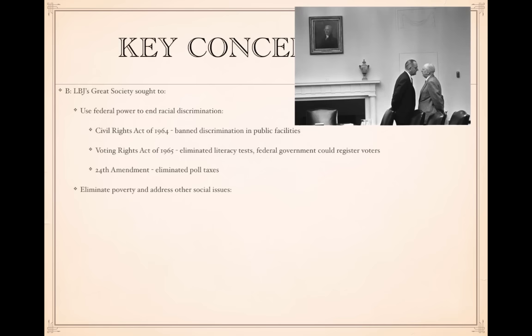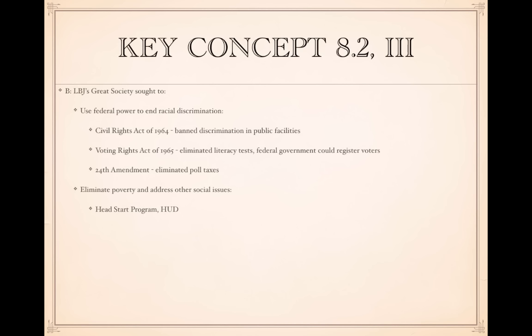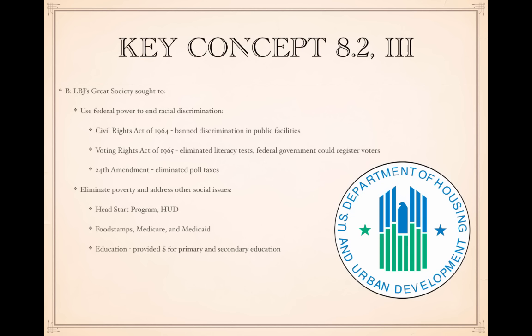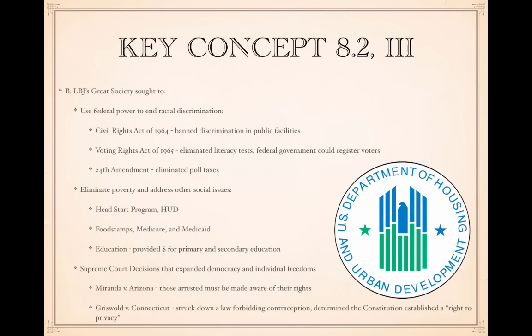The Great Society also sought to eliminate poverty and address other social issues, including the Head Start program for early childhood education, the cabinet position of Housing and Urban Development, food stamps, Medicare, Medicaid, and billions of dollars for primary and secondary education. The Supreme Court also expanded democracy and individual freedoms — for example, Miranda v. Arizona established that arrested individuals must be read their rights, and Griswold v. Connecticut struck down a law forbidding contraception, establishing a constitutional right to privacy that would later be used in Roe v. Wade.